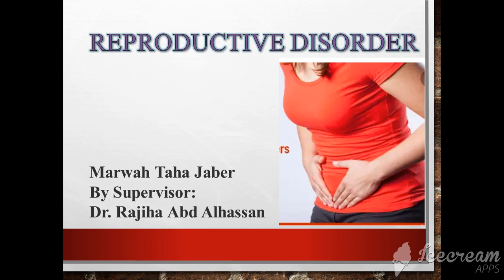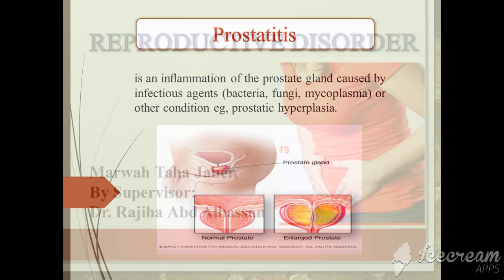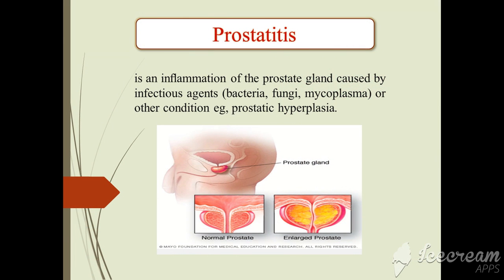My lecture about reproductive disorders. The first condition is prostatitis, which means inflammation of the prostatic gland caused by an infectious agent — may be bacteria, fungi, mycoplasmas, or other conditions. Another condition that causes prostatitis is prostatic hyperplasia.